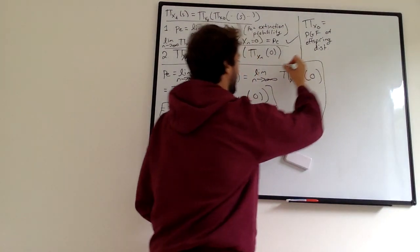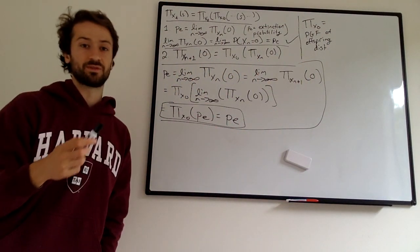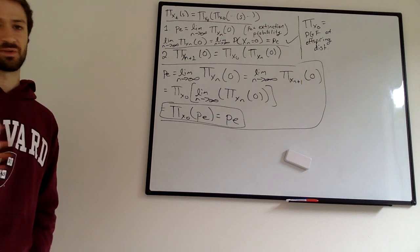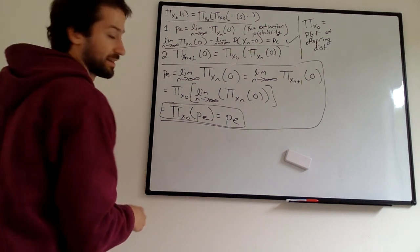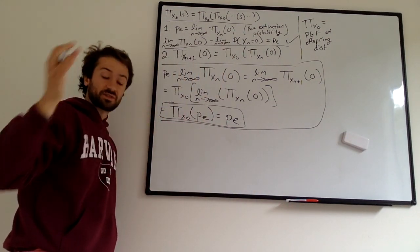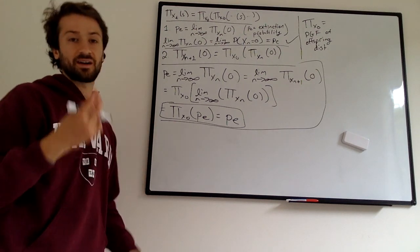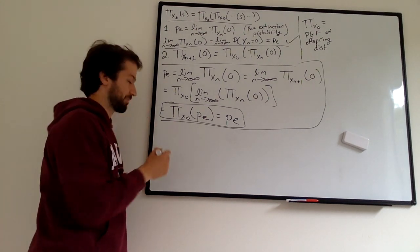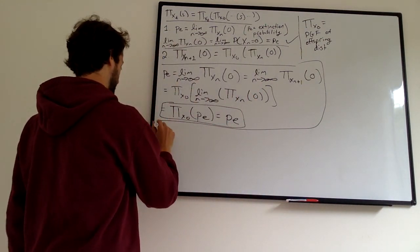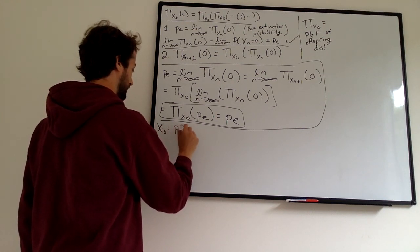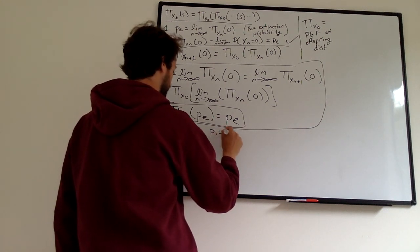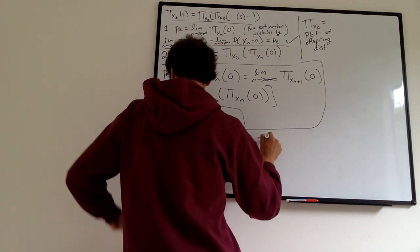It's really important to do a concrete example after something abstract like this, so let's discuss one now — there are also more examples in the linked chapter. One example is a branching process discussed in an earlier video, where we did some intuition about whether it would go extinct. Now we can actually find the probability. Let the offspring distribution X sub 0 be: P0 equals one-quarter, P1 equals one-half, P2 equals one-quarter.